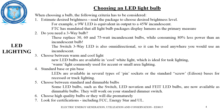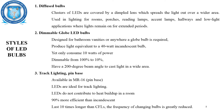Choose between warm and cool lighting: new LED bulbs are available in cool white light, ideal for task lighting, and warm light, commonly used for accent and small area lighting. LEDs are available in several types of pin socket or standard screw Edison bases for recessed or track lighting. Some LED bulbs are available as dimmable and will work on a standard dimmer switch. Choose high-quality bulbs to avoid premature failure; look for FCC, Energy Star, and DLC certifications.